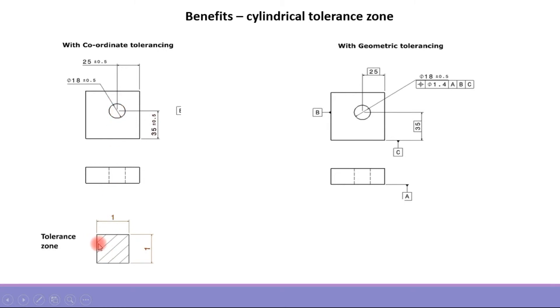So the tolerance zone will be a square of 1 mm, whereas for the GD&T callout, the tolerance zone is already defined in the feature control frame, that is diameter 1.4. So the axis of the hole can vary within a cylindrical tolerance zone of 1.4 mm diameter.